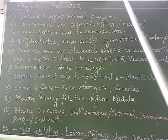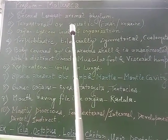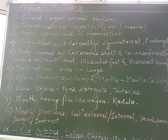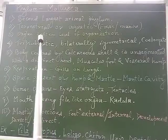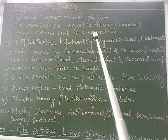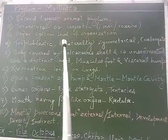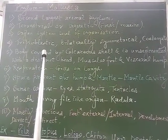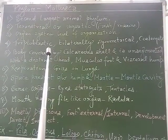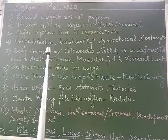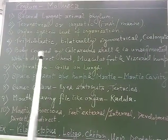We will now discuss phylum Mollusca. Mollusca is the second largest phylum in the animal kingdom, and its members have a soft body. They may be terrestrial or aquatic — in fresh water or marine water. They also have organ system level of organization; the body is triploblastic, bilaterally symmetrical, and coelomate — features carried forward from Annelida.